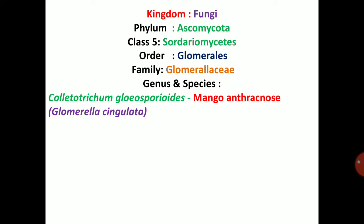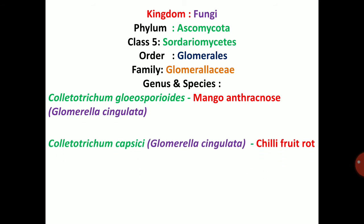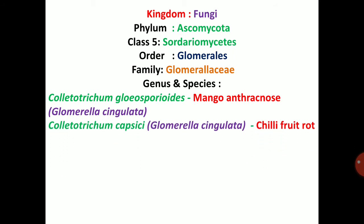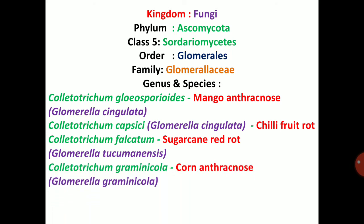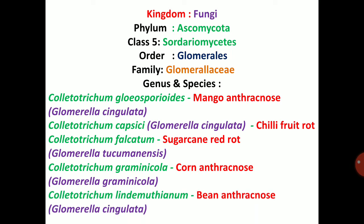The sexual stage is Glomerella singulata. Next one is Colletotrichum capsici, sexual stage Glomerella singulata, that causes chili fruit rot. Colletotrichum falcatum causes sugarcane red rot, sexual stage is Glomerella tucumanensis. Next is Colletotrichum graminicola, causing corn anthracnose, sexual stage Glomerella graminicola. Next, Colletotrichum lindemuthianum, sexual stage Glomerella singulata, which causes bean anthracnose, one of the important diseases in beans.